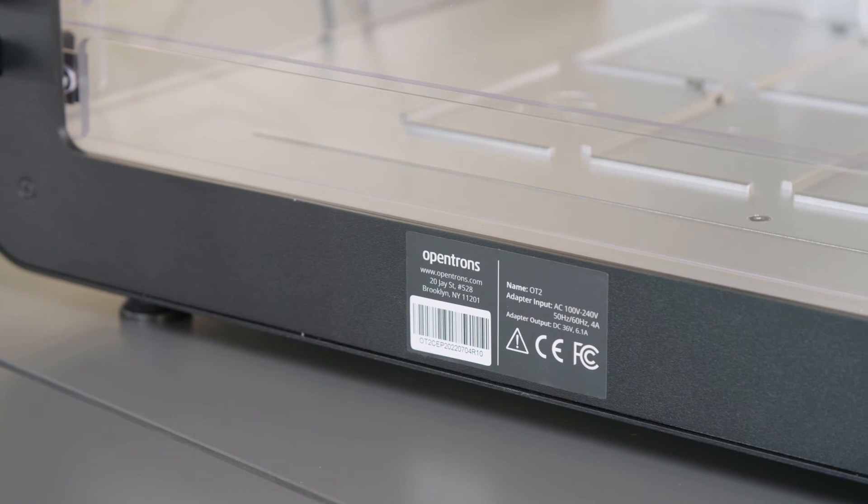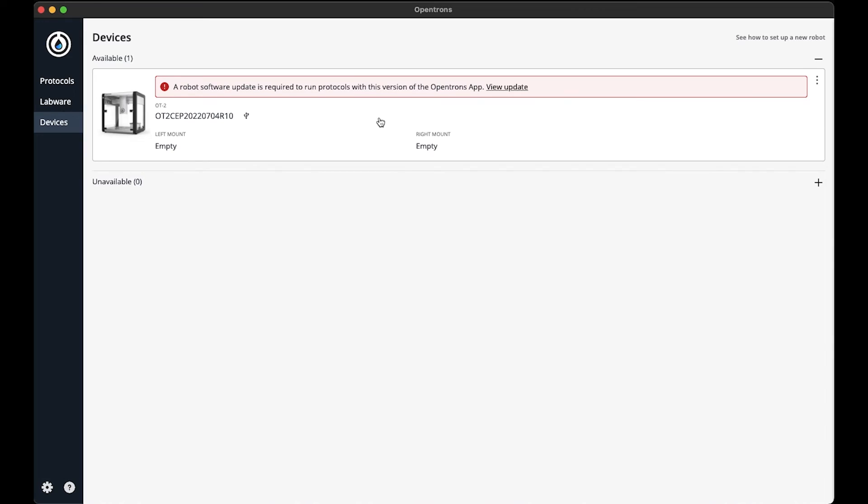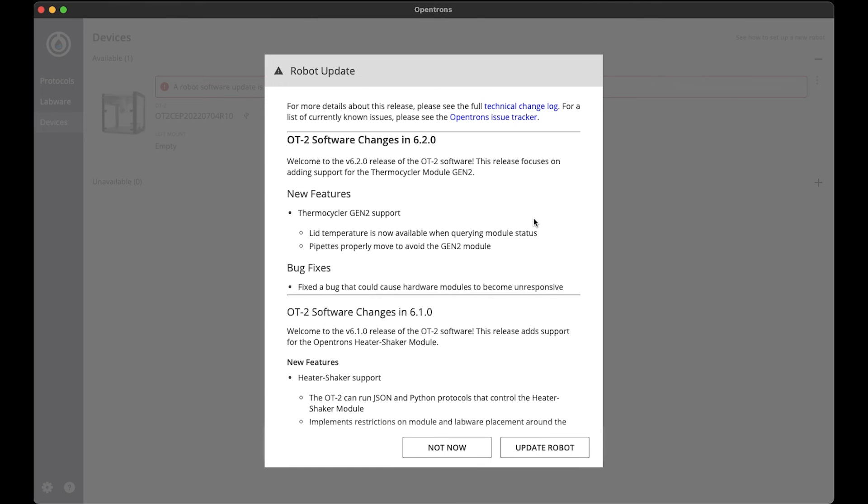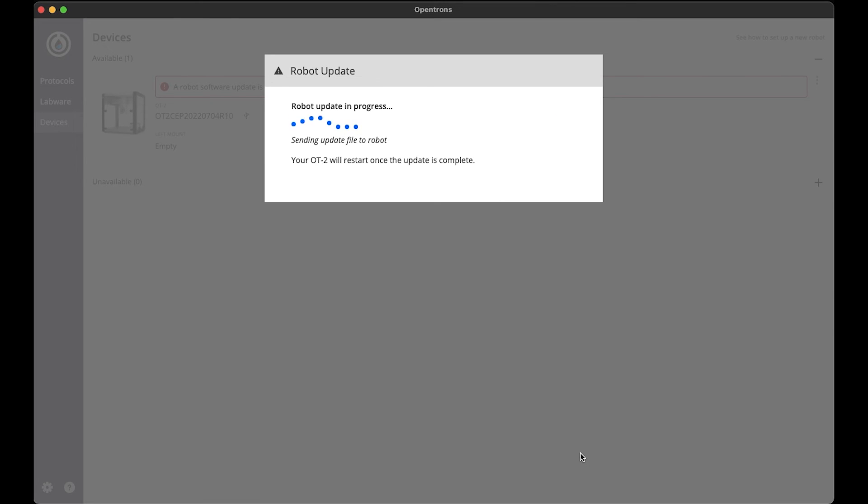Since my OT2 is new, there's a red banner telling me to update the robot software before I can run a protocol. I'll go through that very quickly. I will just view the update and update the robot. It will take a few minutes for the robot to update.